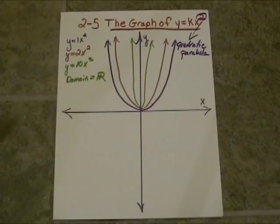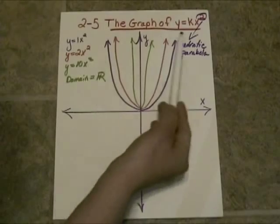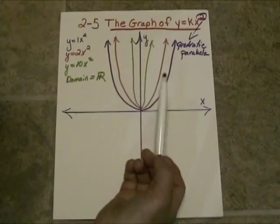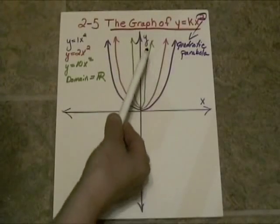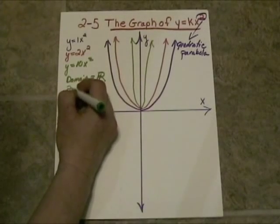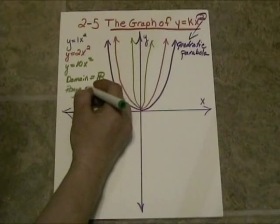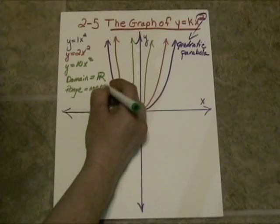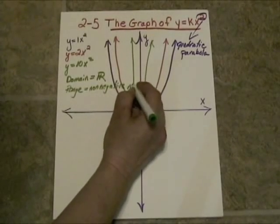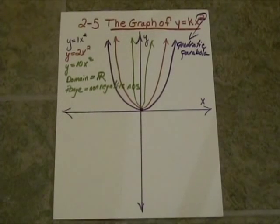On this particular function, the range — if k is positive, no matter how big k gets — will never generate a y value that's negative because of the squaring. So the range will never be negative; it is all non-negative numbers. We say non-negative because it does include zero, and zero is not negative nor positive — it's just neutral.